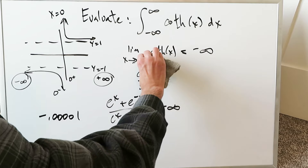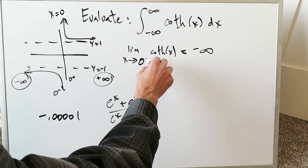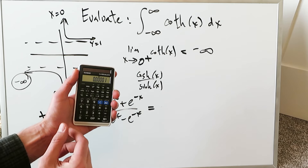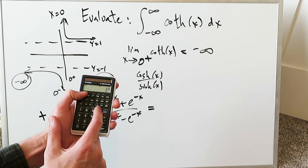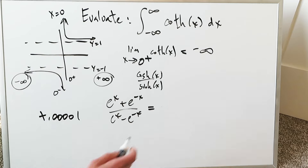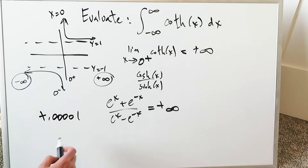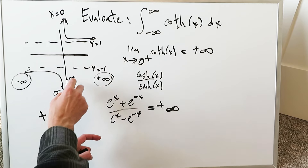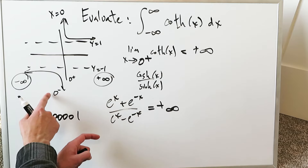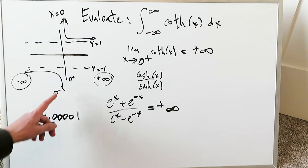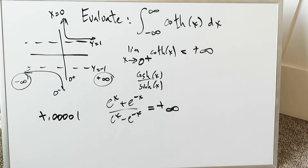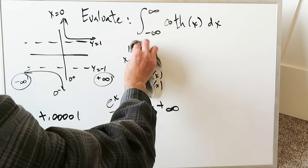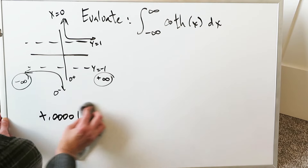As x approaches 0 from the right the situation is similar in computation but different in sign. Take a positive value like 0.0001, compute hyperbolic tangent and its reciprocal, getting 100,000. As more zeros are added the value approaches positive infinity, as shown on the graph. The limit does not exist at 0 because the left-hand limit (−∞) and right-hand limit (+∞) are not equal, so the Type 2 improper integral dominates due to this infinite discontinuity at x = 0.